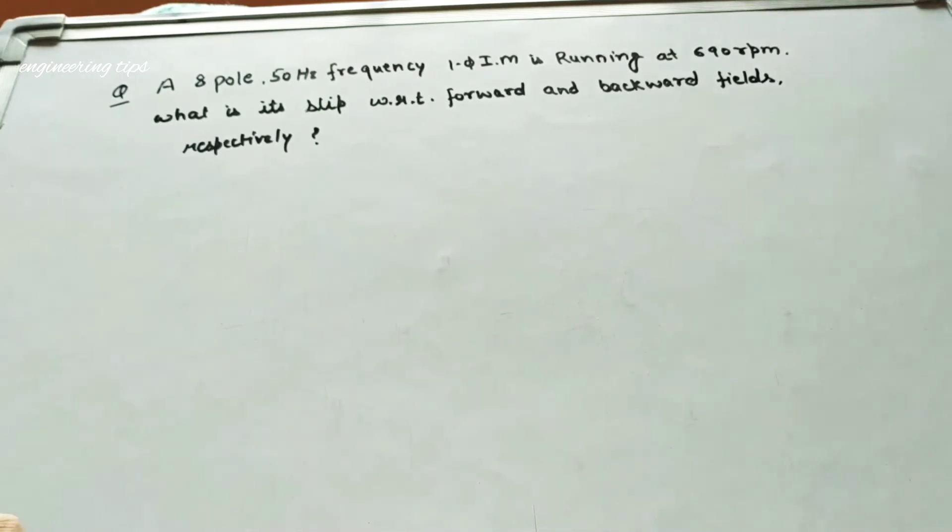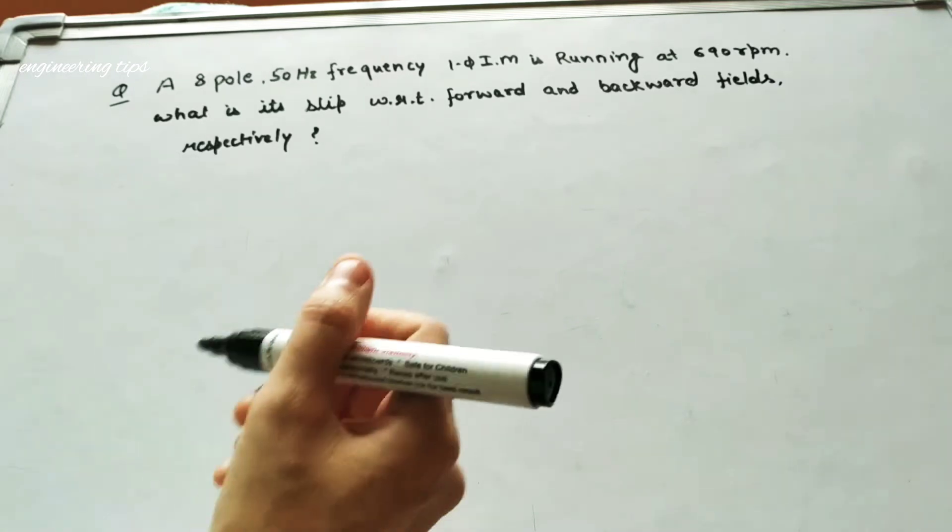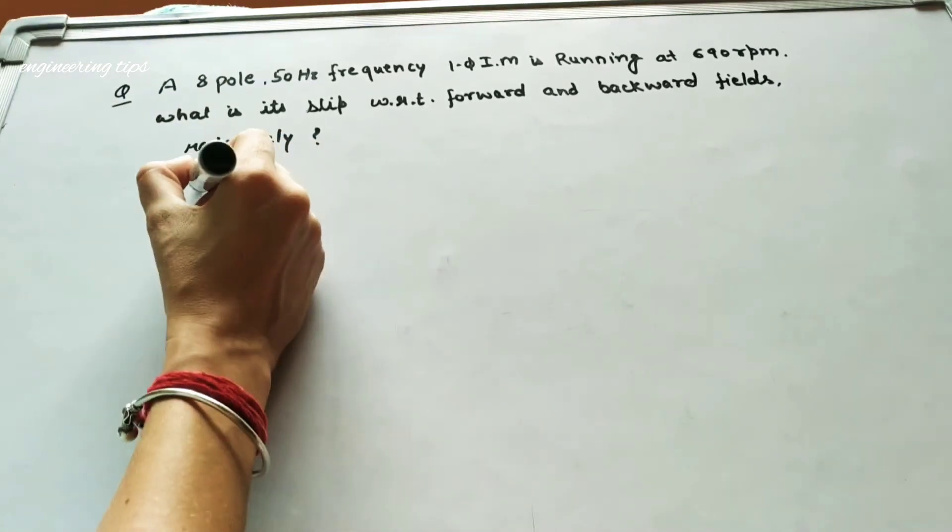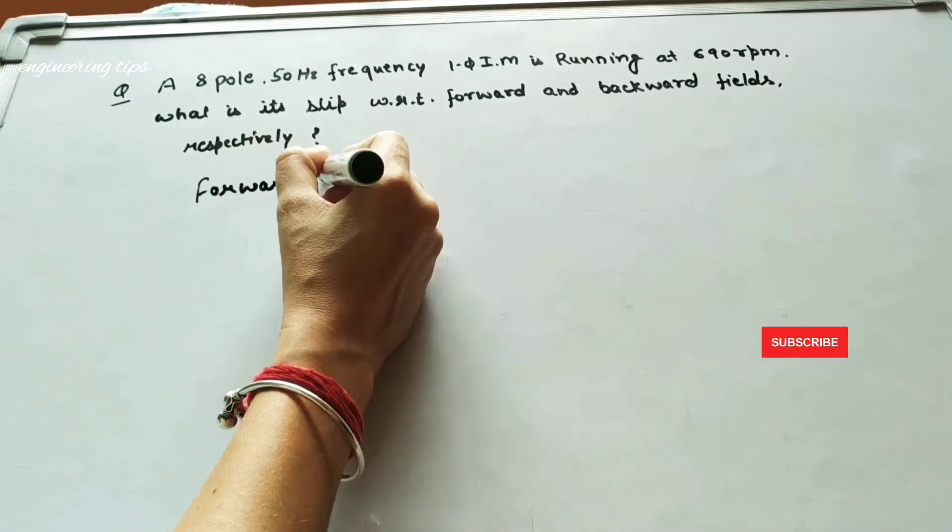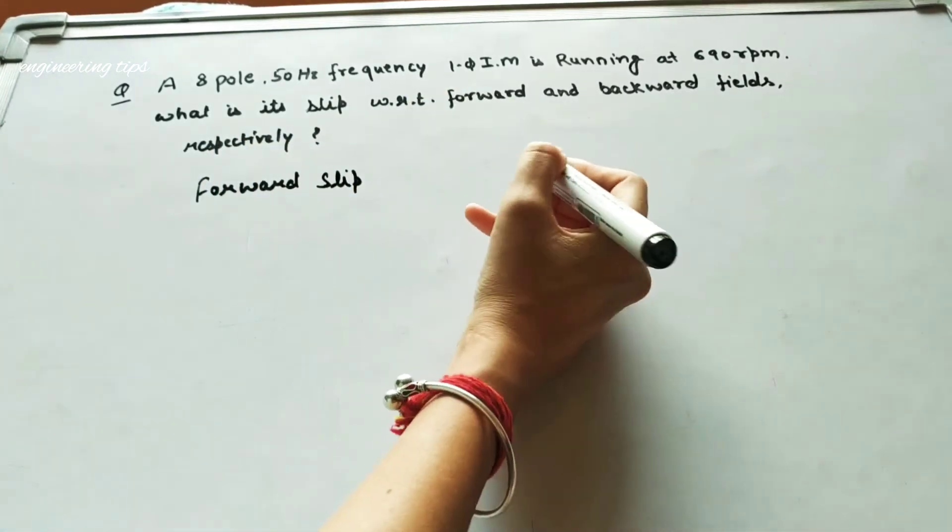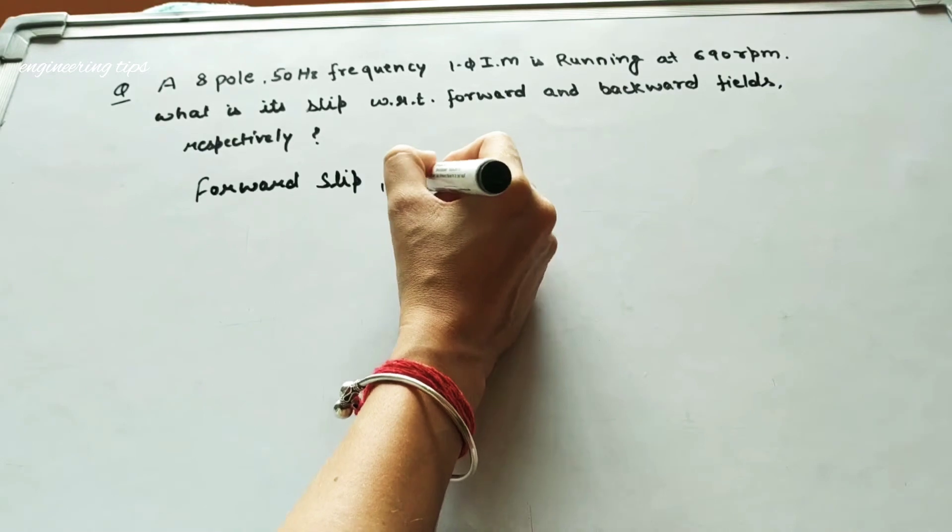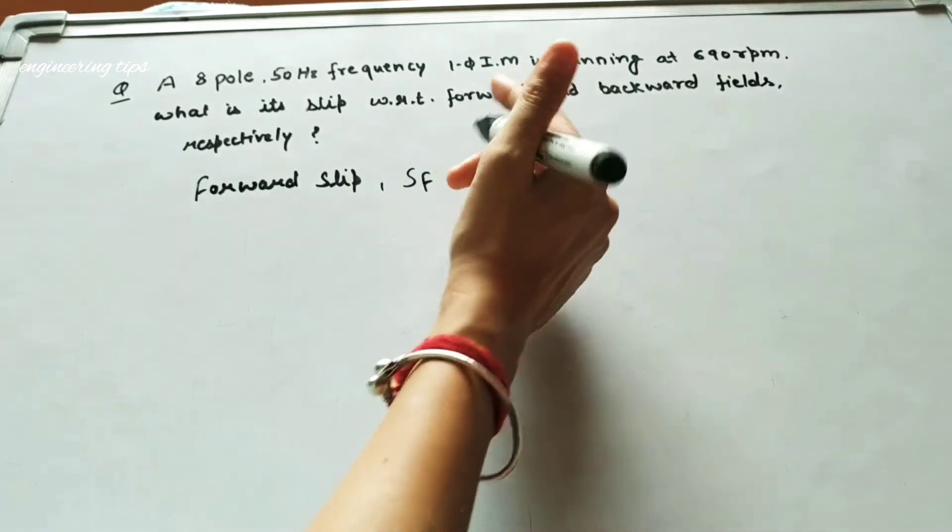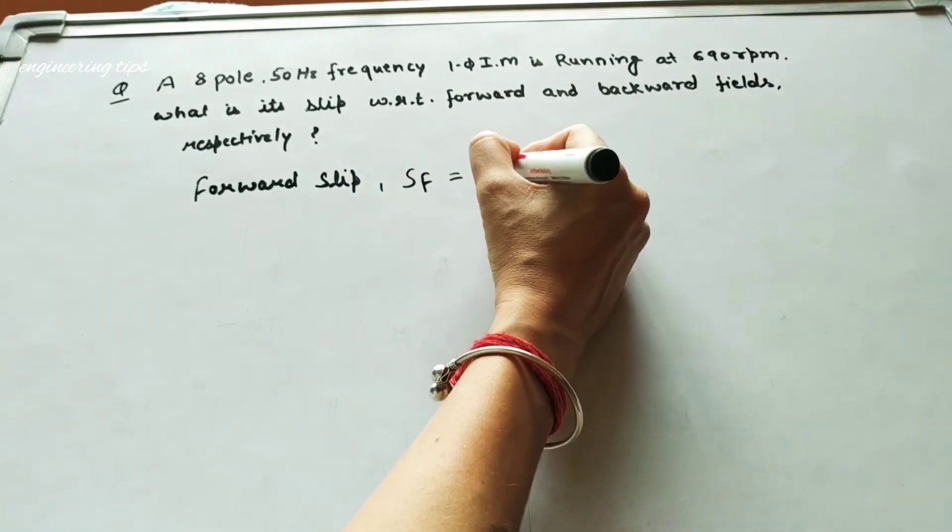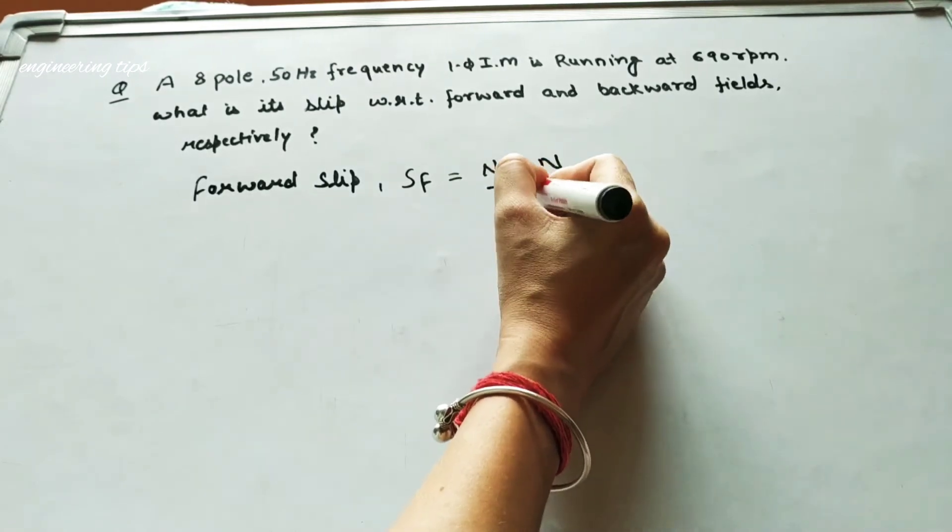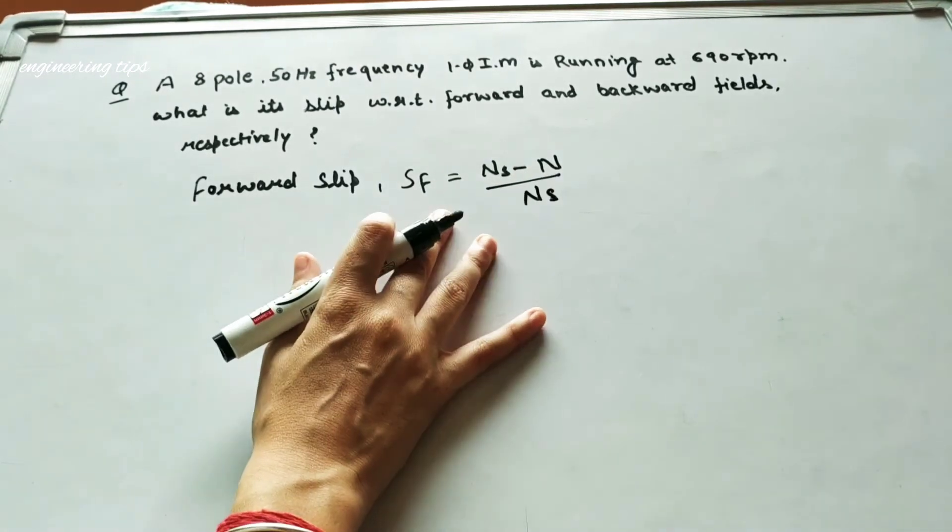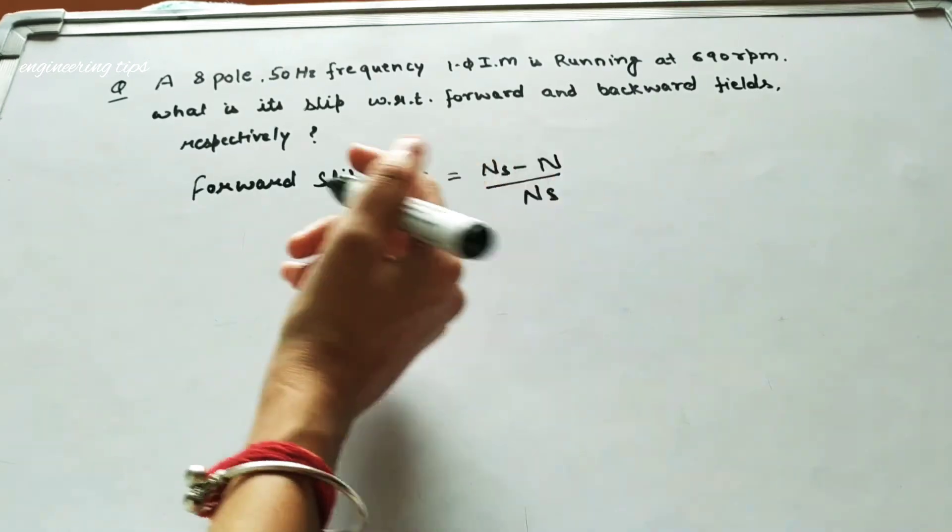So how do we find this out? First, what is forward slip and what is backward slip? Forward slip, SF, is written as SF equals NS minus N over NS. That is forward slip.